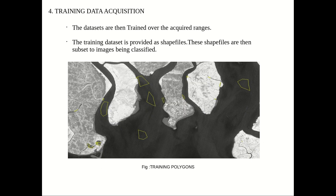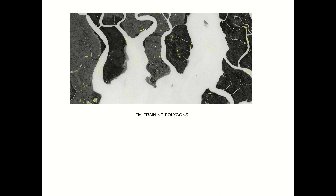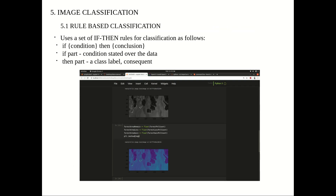Moving to training data acquisition. The training dataset is provided as shape files. The datasets are then trained over the acquired range, and these shape files are then subset to the image being classified, as shown in the image. In image classification, we employ two techniques: rule-based classification and random forest classification. Rule-based classification comprises if-then rules for classification — an if-condition leads to the conclusion.